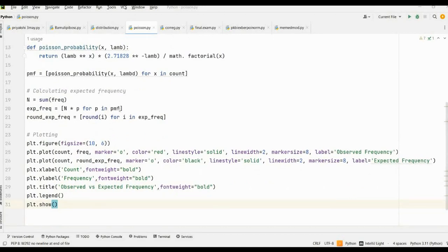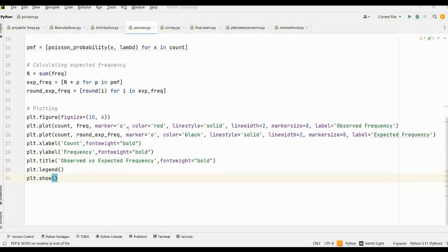Next, coming to the code for plotting, first we type plt.figure and here we take the figure size as 10, 6. In the plotting, we take the marker equal to O, line style equal to solid, line width equal to 2, marker size equal to 8, and we take different colors for observed versus expected frequency as red and black.